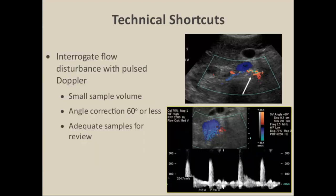Other technical shortcuts: use a small sample volume, usually 2 to 3 millimeters, placed within the vessel in the area of interest. Angle-correct at 60 degrees or less so we don't have artificially elevated peak systolic velocities, and make sure we have adequate waveform samples to determine the peak systolic velocity at each segment.